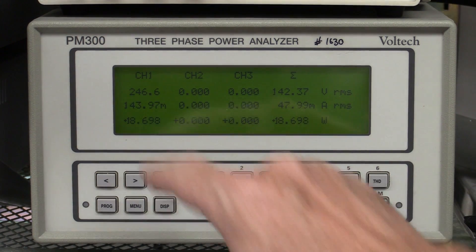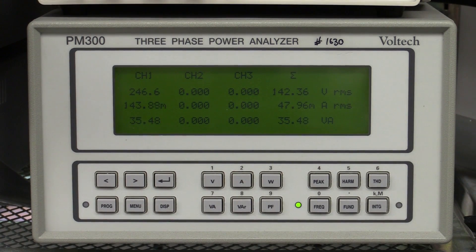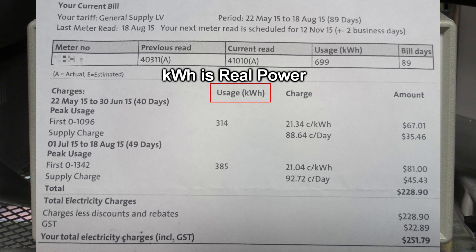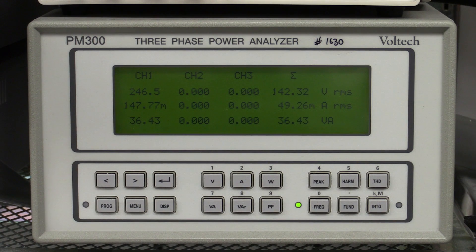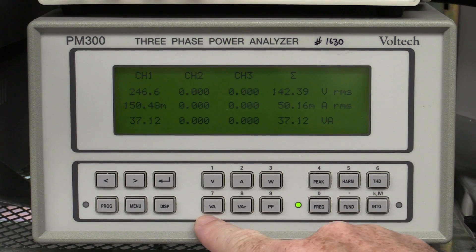VA, because look, if we have a look at this, this is apparent power, and sure enough, it's drawing a lot more apparent power. But unless your electricity bill says you're being charged in VA, then you're not being charged for this power factor, so even if this thing worked and corrected your power factor, you're not being charged for it, so you don't save a damn cent.